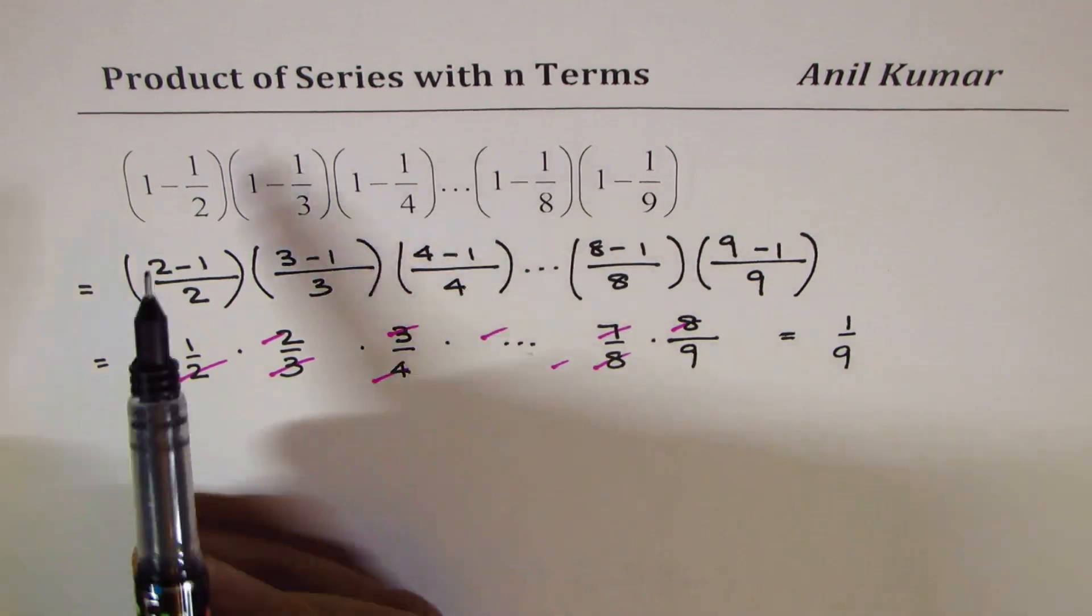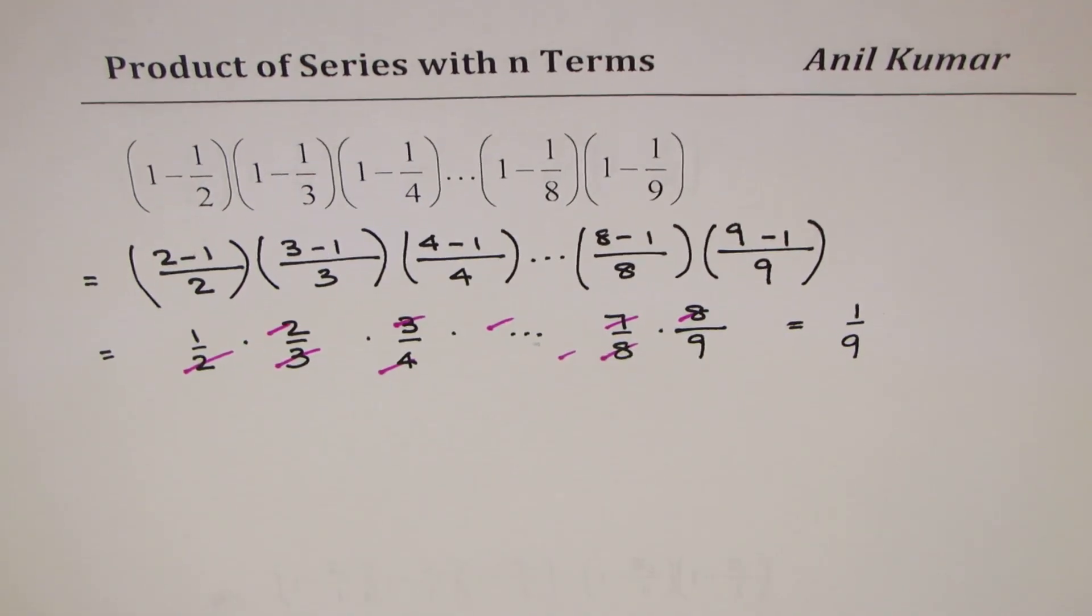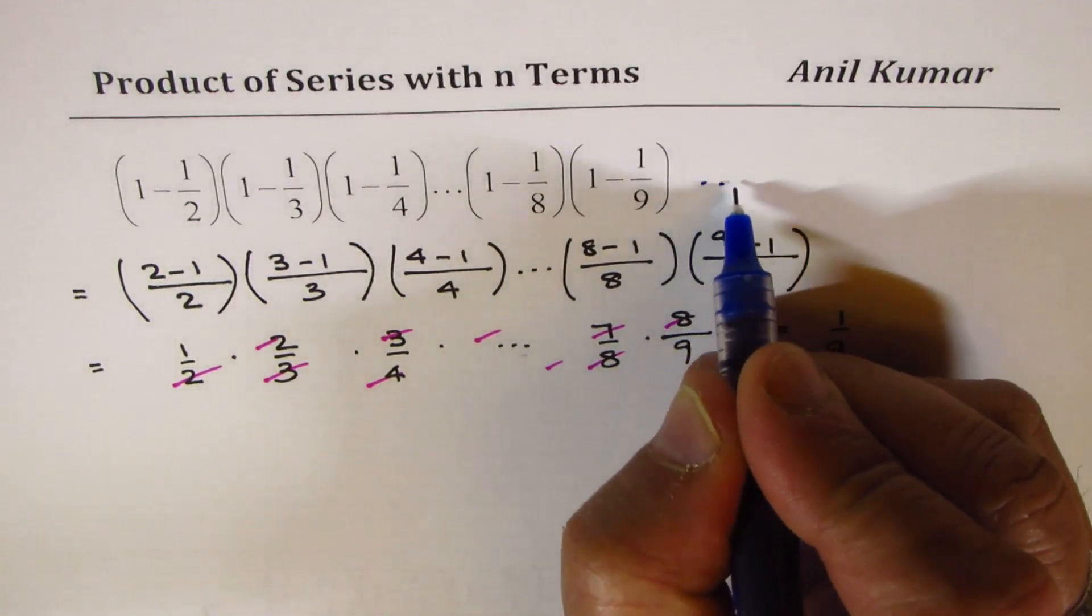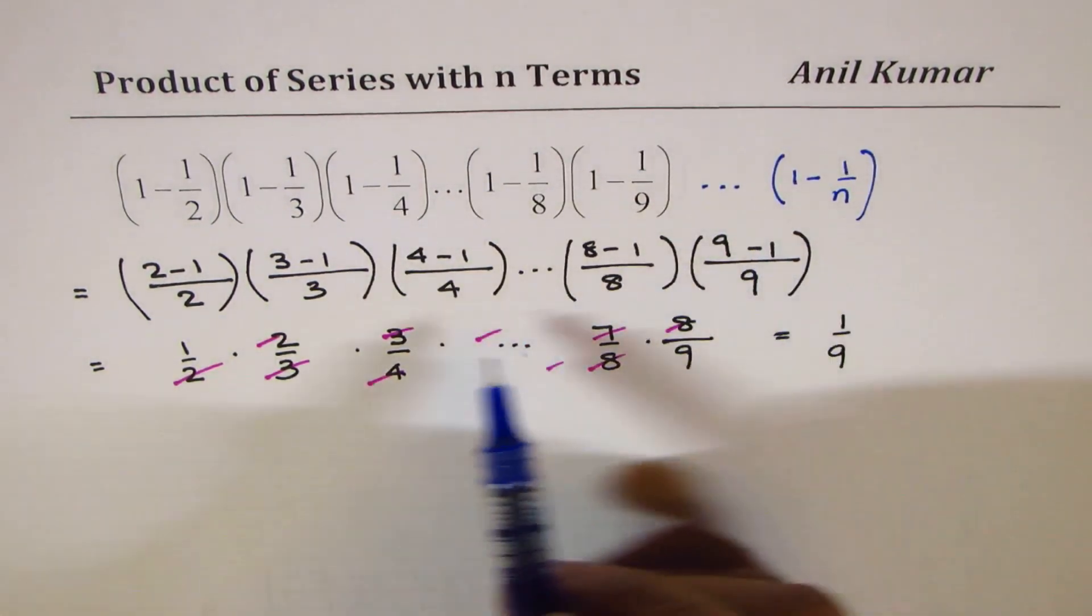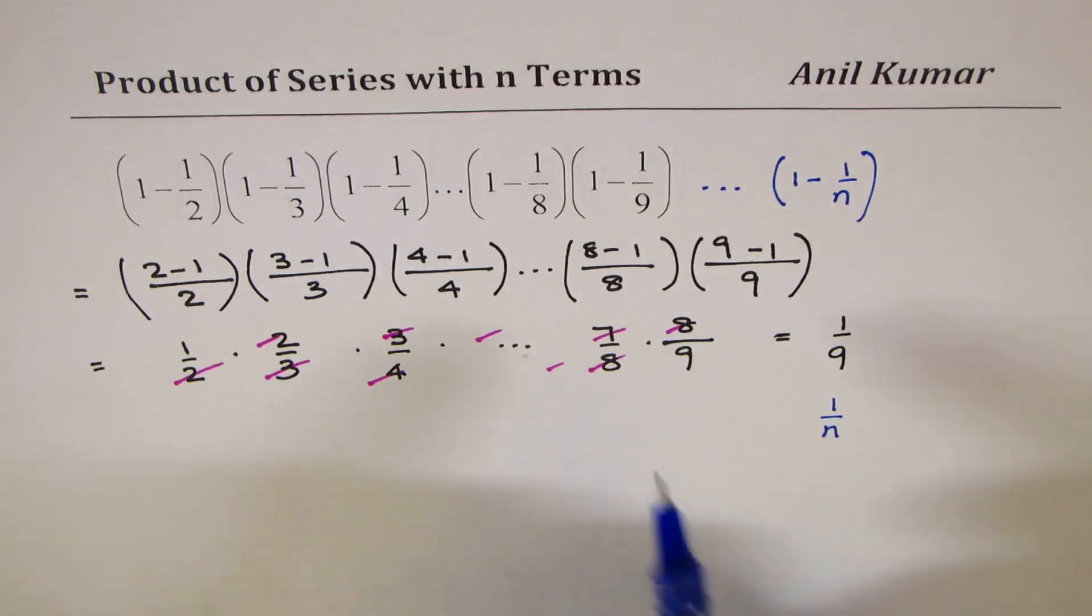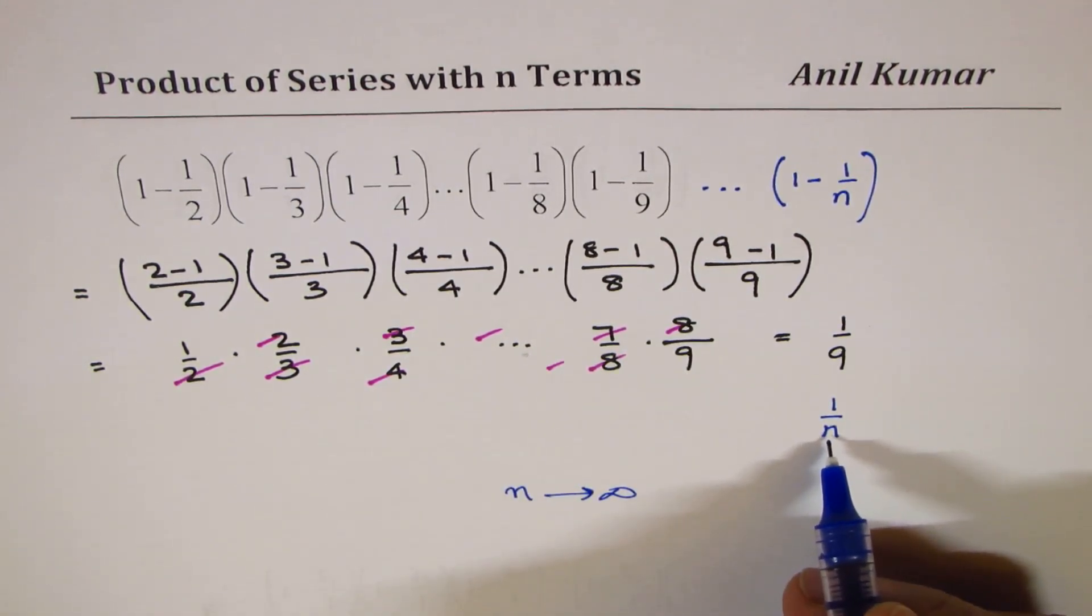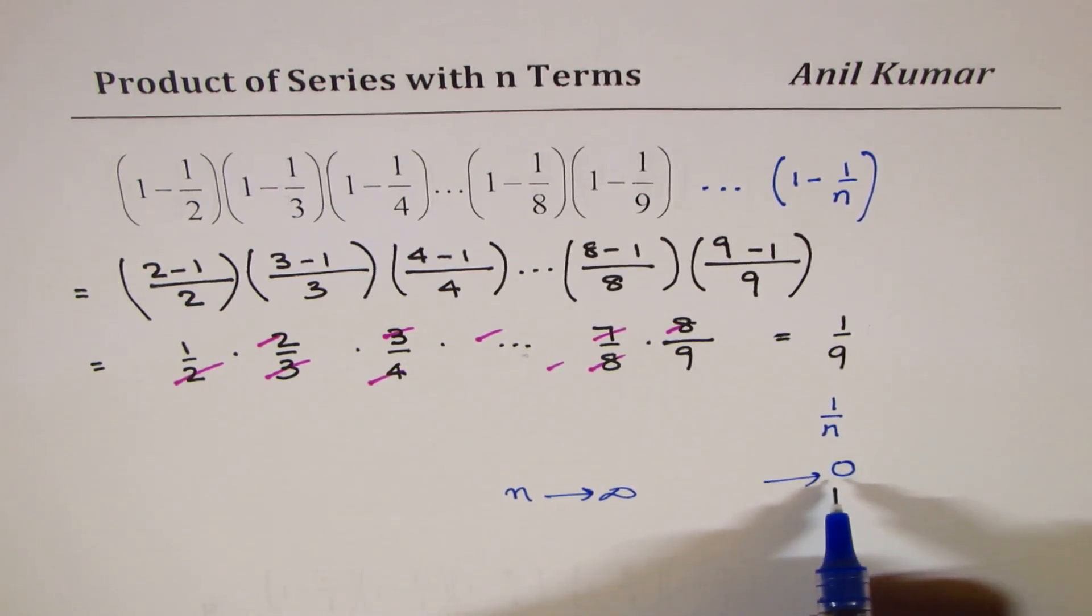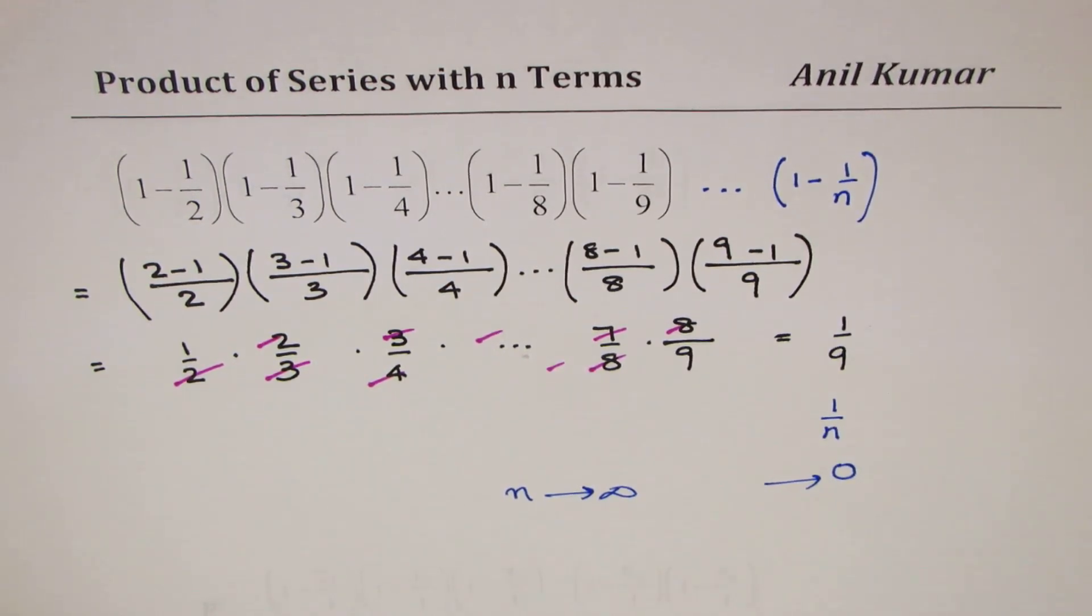So, as a trick, you can say the answer is 1 over 9. Now, let us see what happens when we extend our series. Instead of 1 over 9, if I continue this to 1 minus 1 over n, then what happens? Then, obviously, what we are going to get is 1 over n as our answer. That is our answer when the series is extended to n numbers. And now, tell me what happens when n is approaching infinity. Well, if n is approaching infinity, then series will be approaching 0.